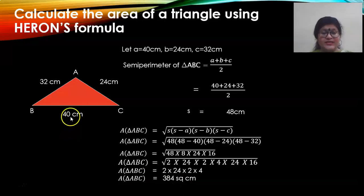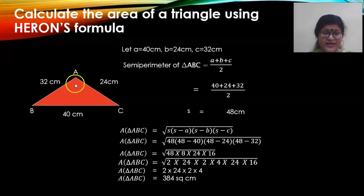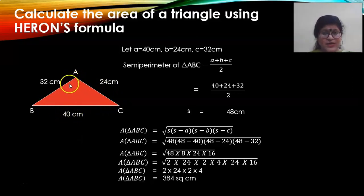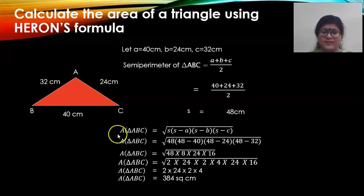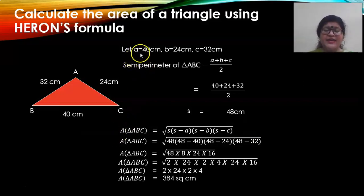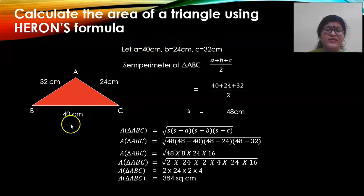In this question, we have found out the area of the triangle by using Heron's formula, because the height was not mentioned — so we cannot use half base into height. Since the three sides are given, we use Heron's formula. And it is your choice — you can take any number as A, B, and C from the three given sides.